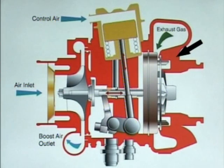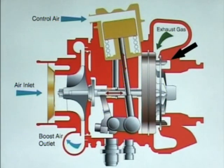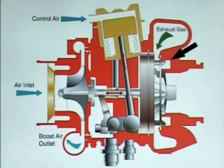This is achieved by varying the area of a nozzle, a set of guide vanes that control the flow through the turbine.